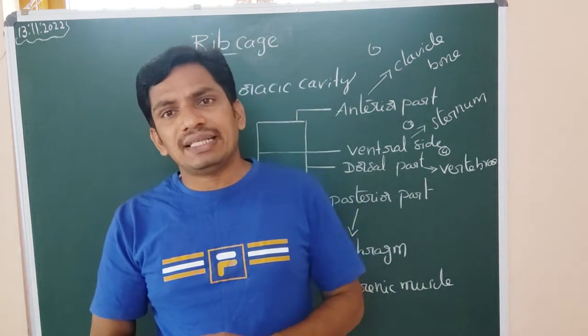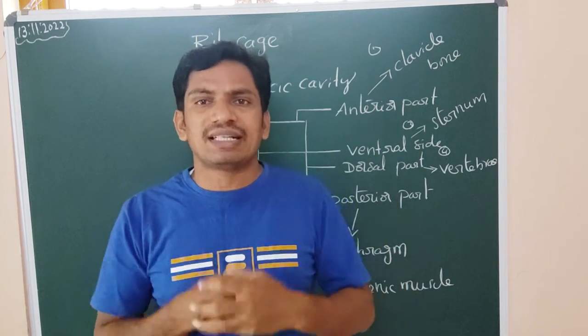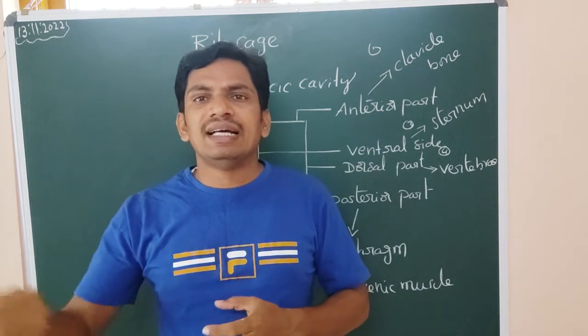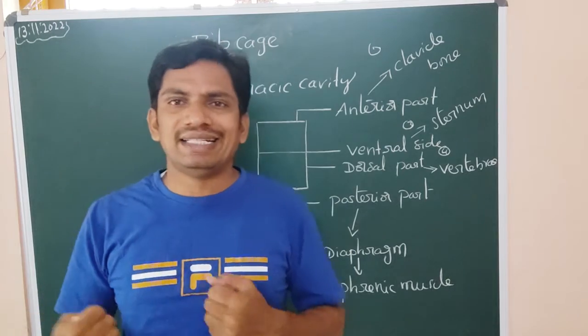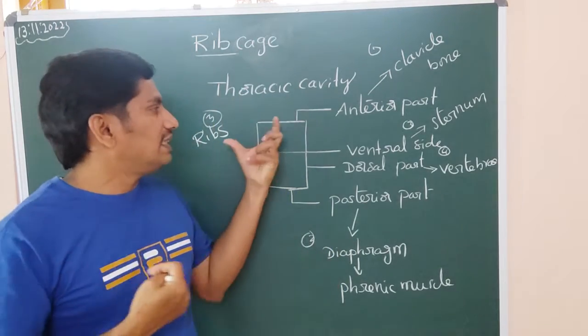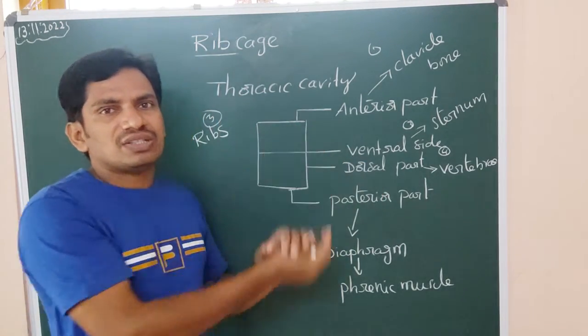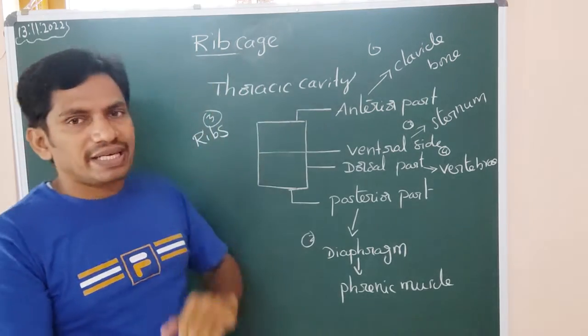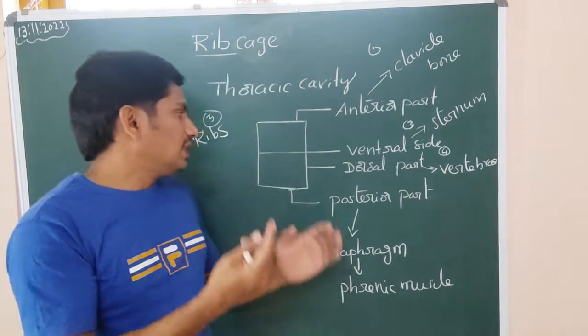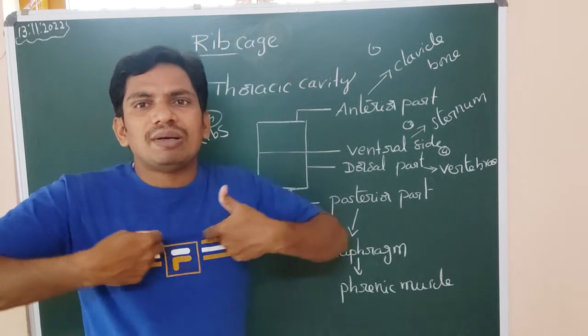In the rib cage itself, lungs are safely protected along with the pleural membrane. Even though it has bony box required, it prevents the external shocks and any blows. That bony box which is known as the rib cage.